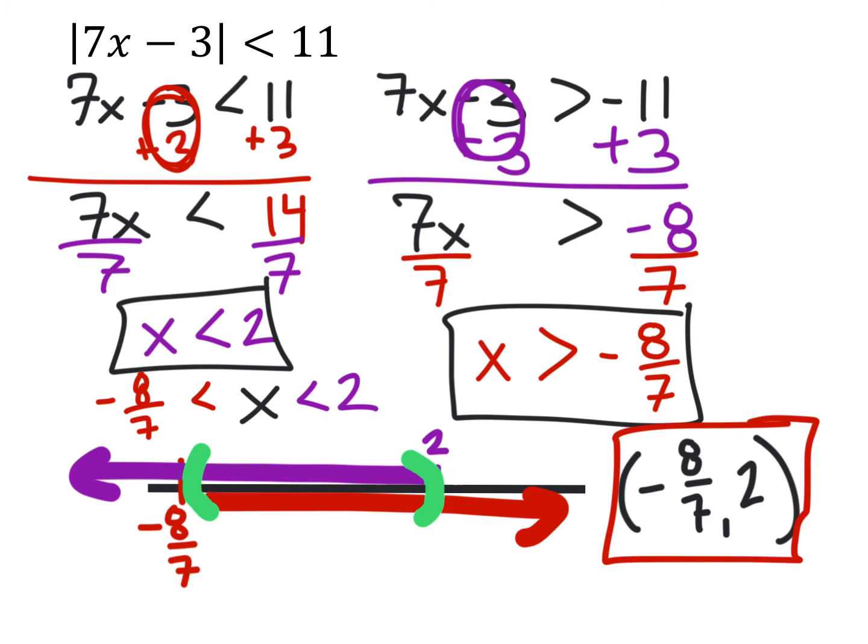Now, that may look like a coordinate pair, but it's not. That's interval notation for the answer here. It means that any value between negative 8 sevenths and 2 would give us a correct answer.